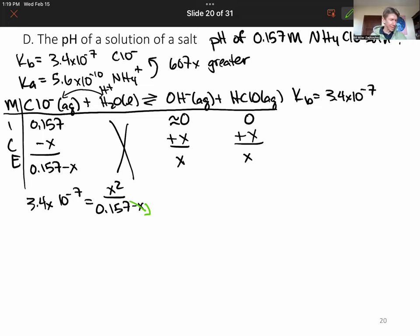And we are left with 3.4 times 10 to the minus 7 times 0.157 and then square root that. And I get that x equals 2.3 times 10 to the minus 4th. And that is our concentration of hydroxide, not hydronium. It is also our concentration of hypochlorous acid.